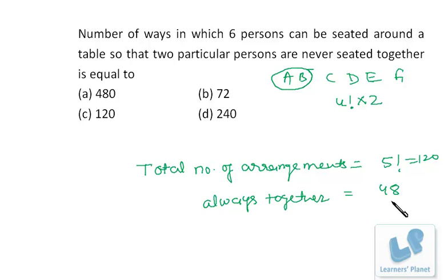So in the remaining cases they will never be together. So this is 72 ways when they are never together. I hope you are clear.